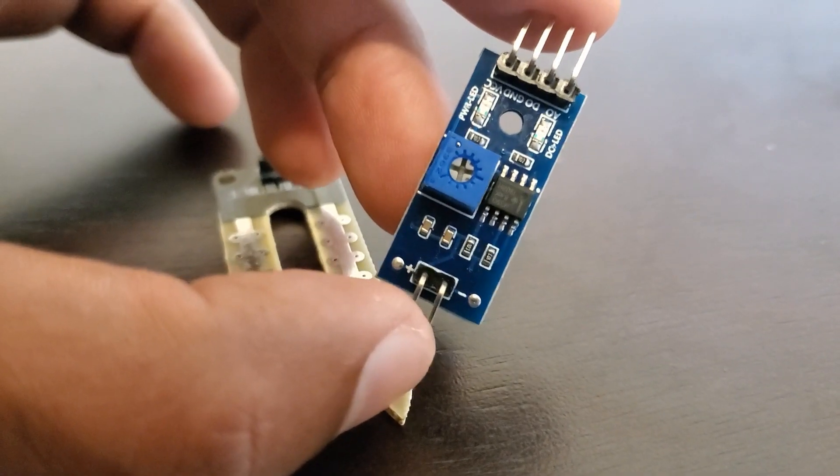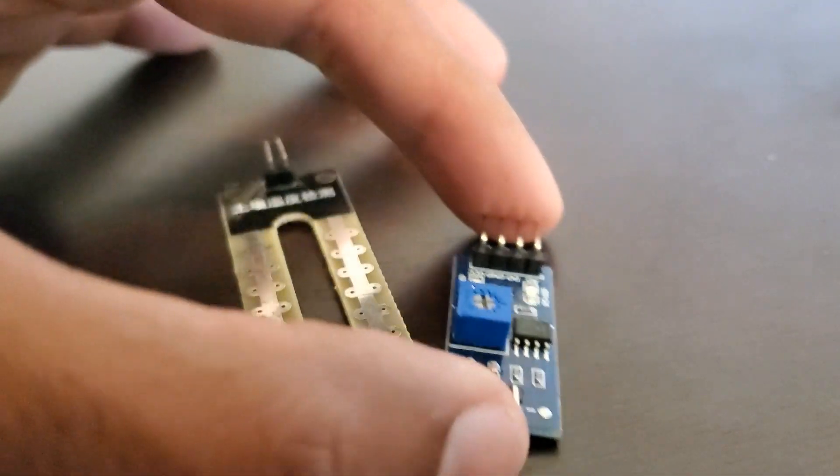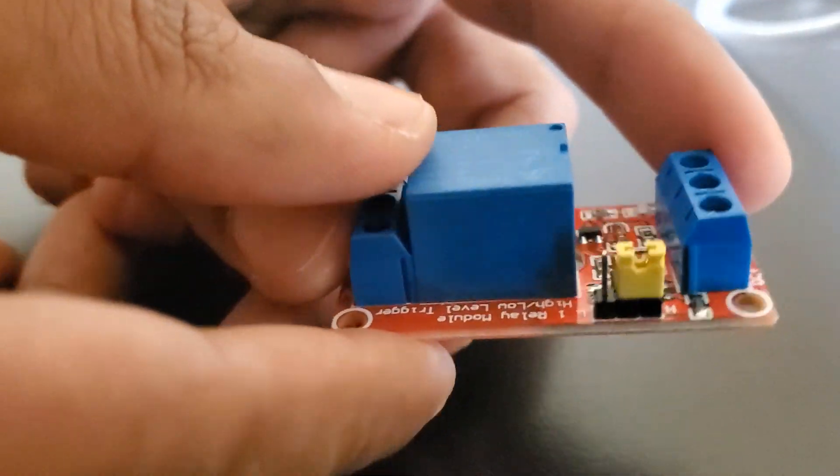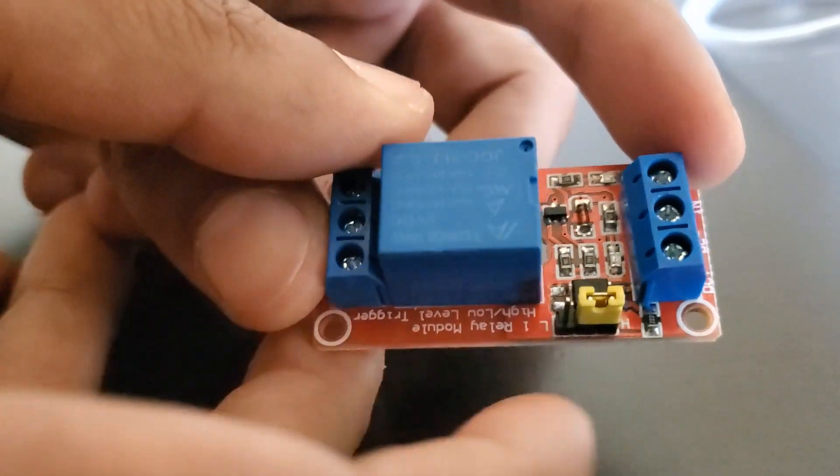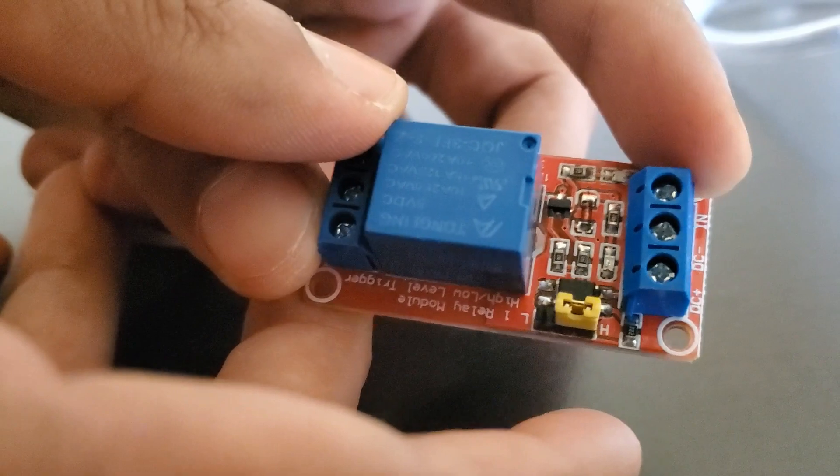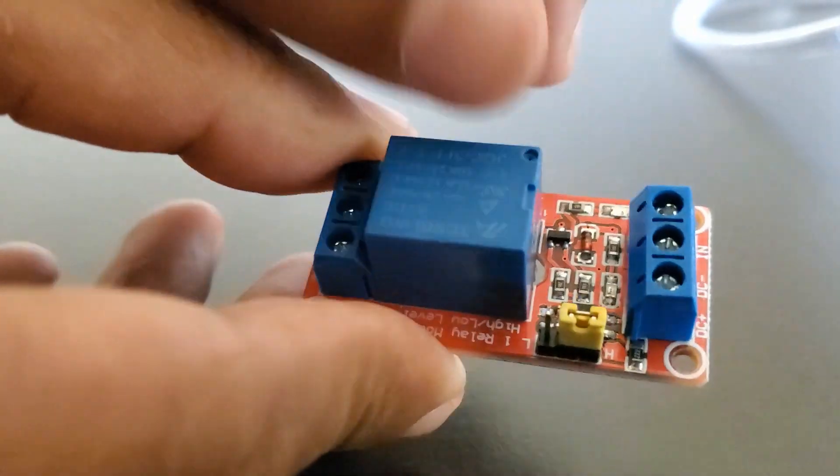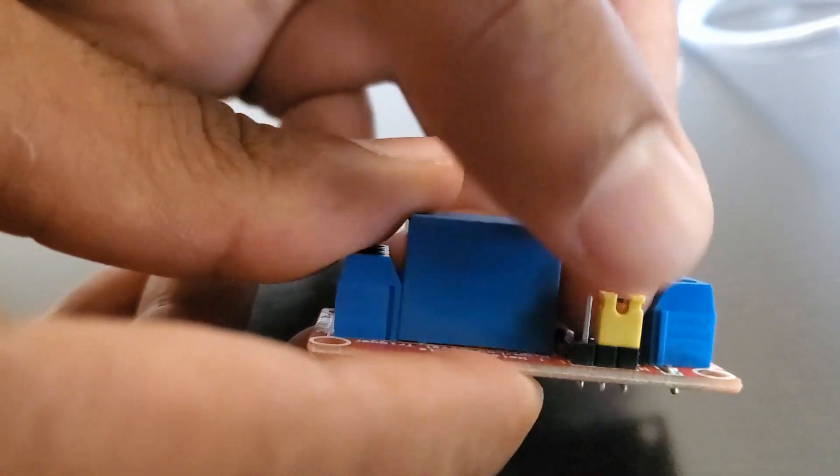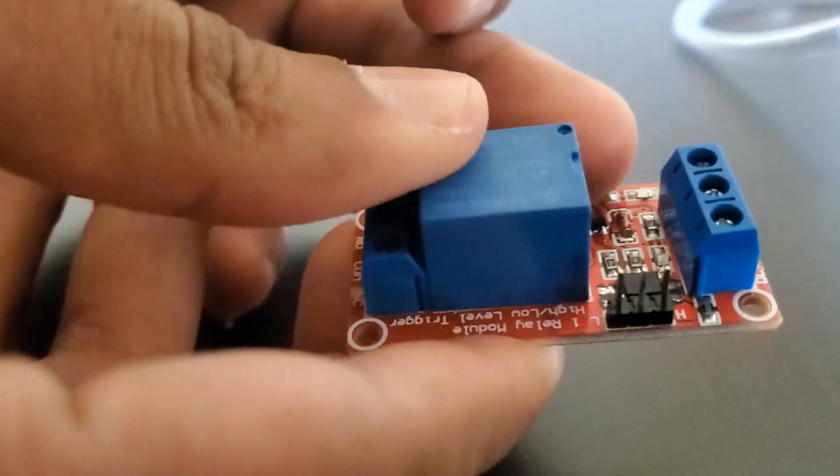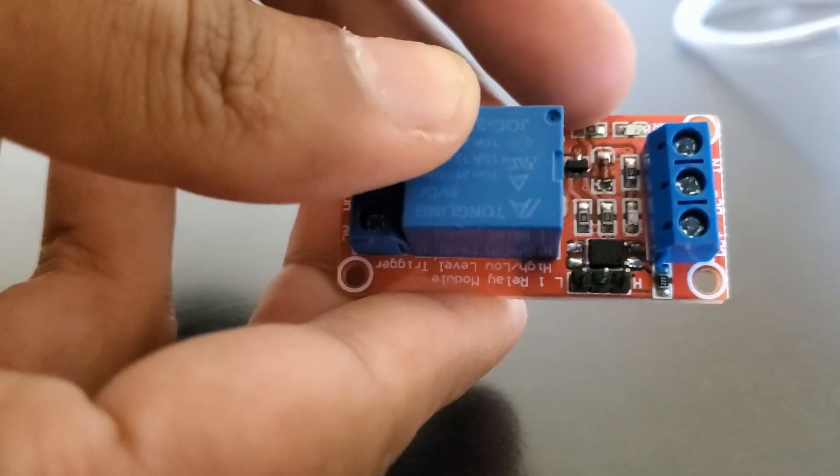For this project, we'll need a soil moisture sensor. I was able to pick up this cheap Chinese one off of Amazon. You'll also need a 5 volt relay module. This one has the capability of being triggered high and low. For this application, we need to make sure that it's in the high trigger mode.